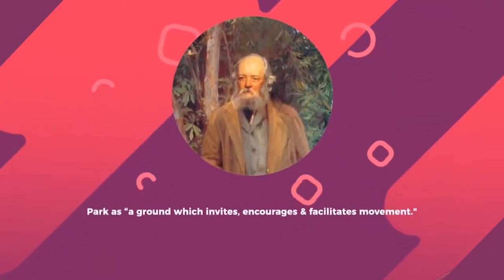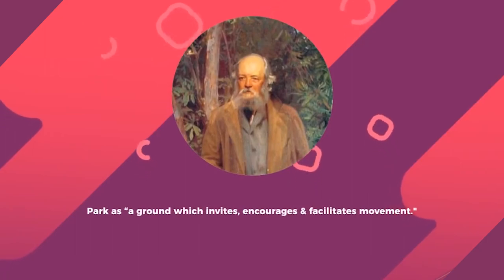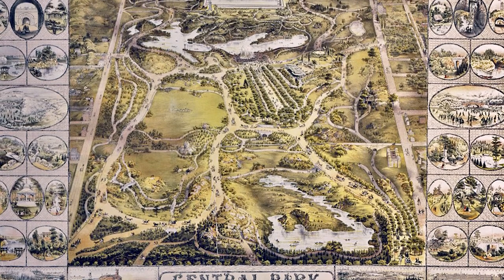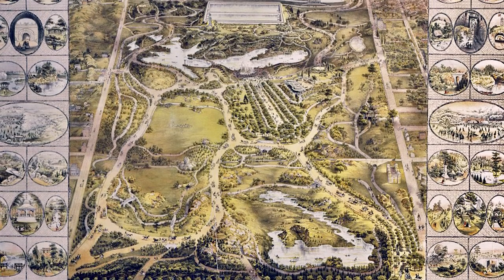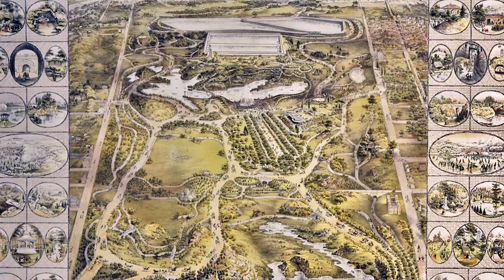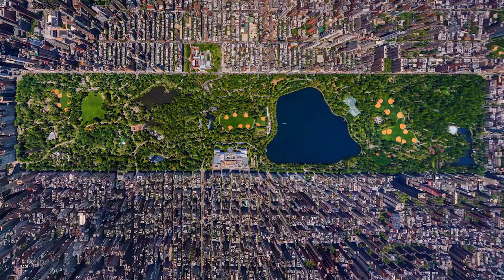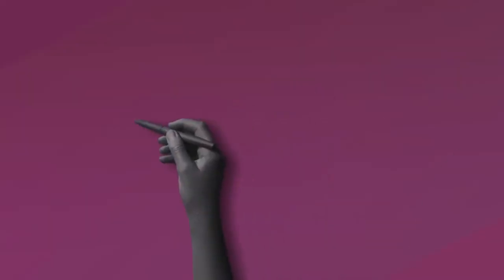The park was designed by Frederick Law Olmsted, the father of American landscape architecture. Influenced by the works of English gardeners and writers, he studied and designed landscapes with visual succession and non-geometric segmentations that encouraged movement and fluidity and had a picturesque quality about them.